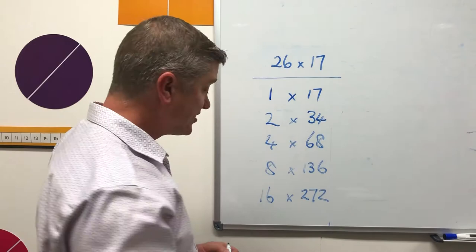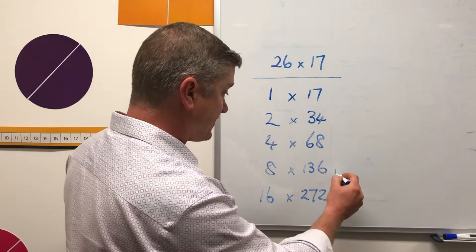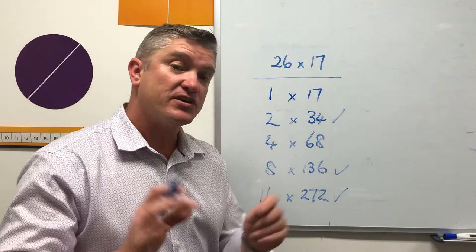16 and 8 is 24. So I'm going to have to add that and that to get 24 17s, and I need two more. So it's a very nice simple approach.